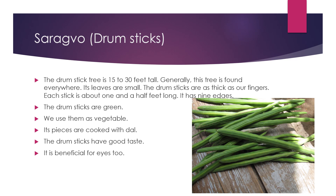Next, we have saraguo or drumsticks. The drumstick tree is 15 to 30 feet tall and is generally found everywhere. Its leaves are small. The drumsticks are thick as our fingers, about one and a half feet long, and have nine edges. The drumsticks are green and we also use them as vegetables. Its pieces are cooked with dal. As a vegetable, the drumsticks have a good taste. It is also used as medicine for the treatment of swelling and gas, cures some diseases of liver and spleen, and is beneficial for the eyes too. The juice of drumstick leaves cures diseases of respiration and hiccup.